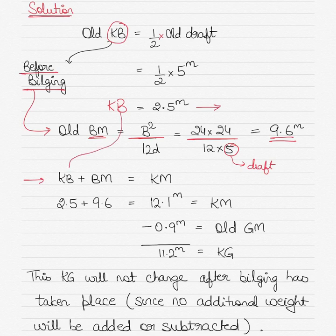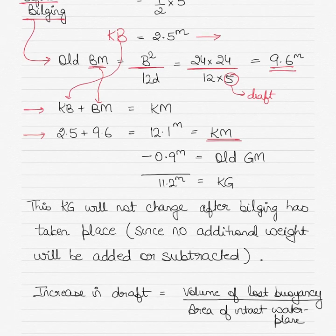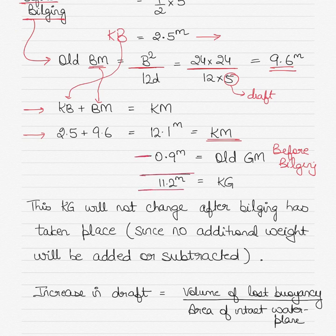KB plus BM gives KM: 2.5 meters plus 9.6 meters equals 12.1 meters. This will be the KM. The old GM given to us in the question before bilging is 0.9 meters, so KM minus GM will give us KG. KM minus GM: 12.1 minus 0.9 gives us the KG of the vessel.